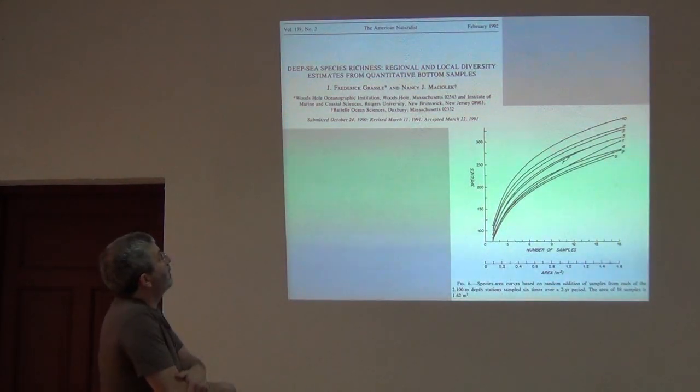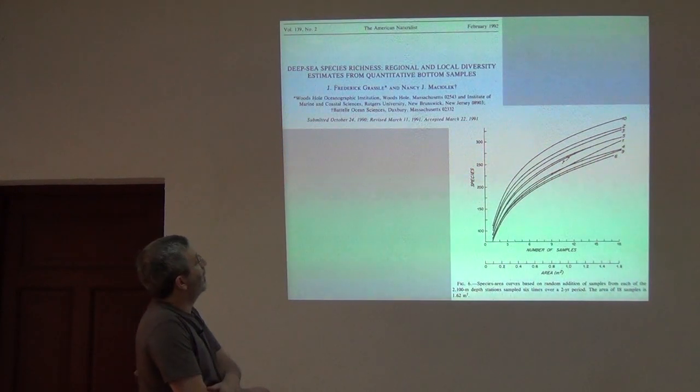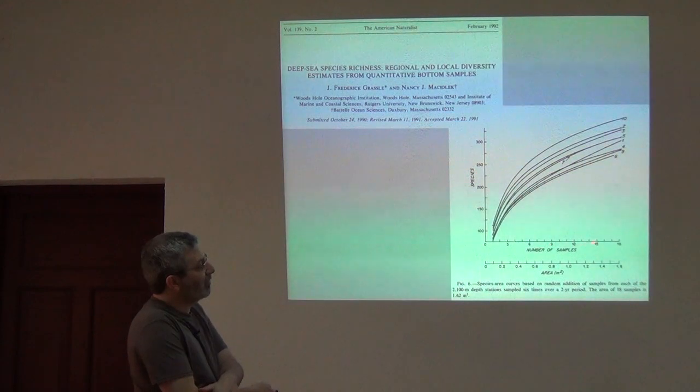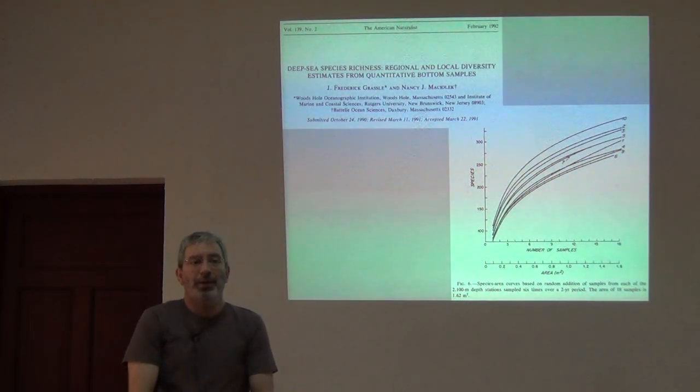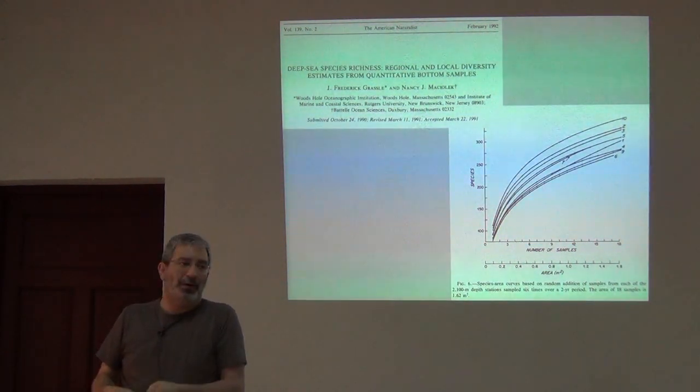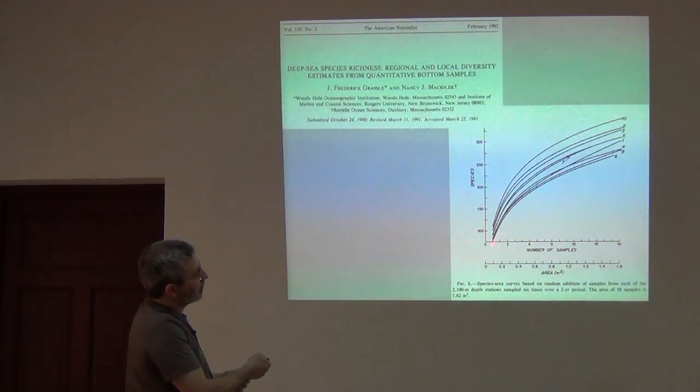Deep sea species richness, regional and local diversity estimates from quantitative bottom sampling. So, here it's number of samples. So, probably they're putting some sort of scoop in, pulling out a bucket full of mud, and then sorting through that. And so, in your average first sample, you're getting between 30 and 125 species.